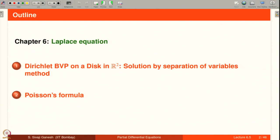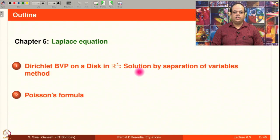Welcome to this lecture on the Dirichlet boundary value problem on a disk in R² for the Laplace equation. The outline is as follows: we solve the Dirichlet boundary value problem on a disk using the separation of variables method and re-derive Poisson's formula. For most of this lecture it is going to be computation, so please stop at every slide and do the computations on your own.